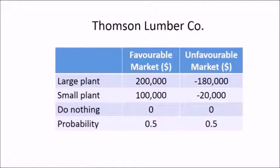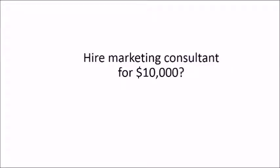The example I will use is about the Thomson number company. The probability of favorable market is 0.5. The owner obtained this probability from his own experience and by following the business news. However, this probability is not accurate. To get a more accurate probability, the owner can hire a marketing consultant to conduct a survey. However, the service is not free. Suppose the consultant charges $10,000 for the survey.